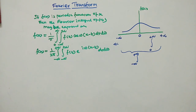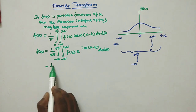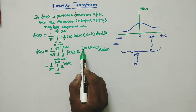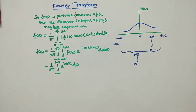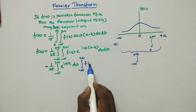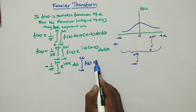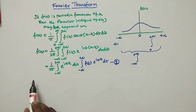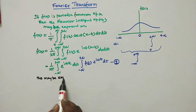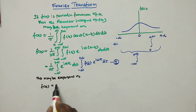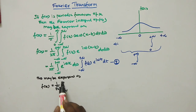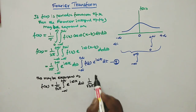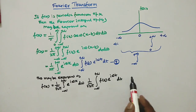This is called the exponential form of f of x. We can separate the integral as 1 by 2π, integral from minus infinity to plus infinity of e to the power i·ω·x dω, times the integral from minus infinity to plus infinity of f of t times e to the power i·ω·t dt. This is equation 1. We can then express this as f of x equals 1 by √(2π) times the integral from minus infinity to plus infinity of e to the power i·ω·x dω, multiplied by 1 by √(2π) times the integral from minus infinity to plus infinity of f of t times e to the power i·ω·t dt. This is equation 2.